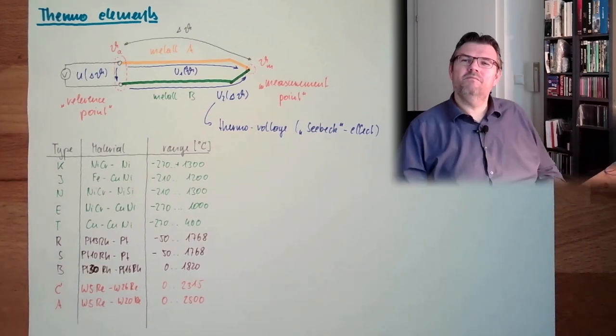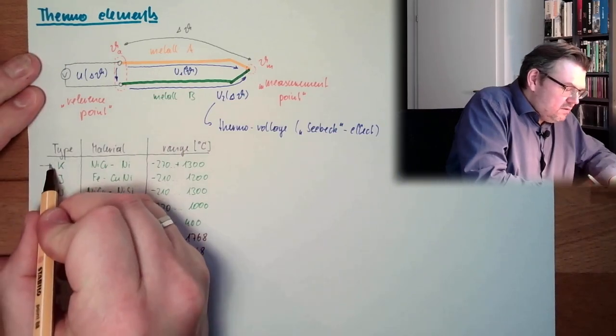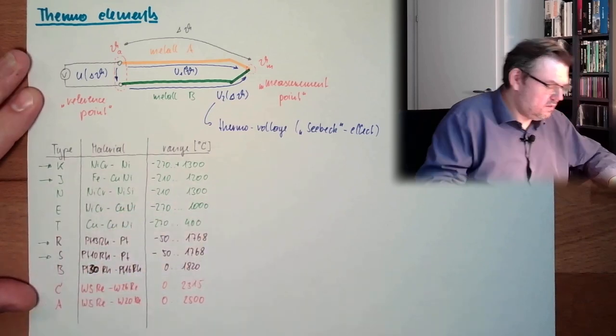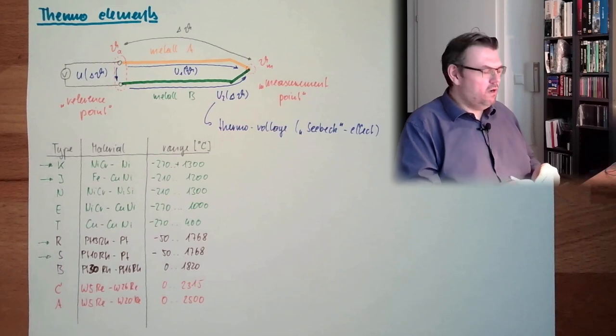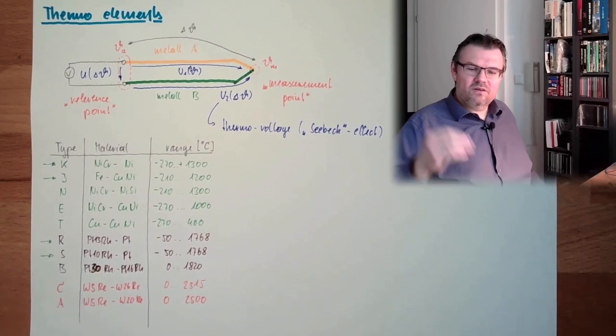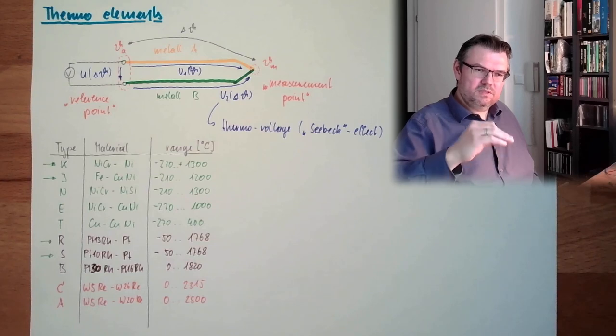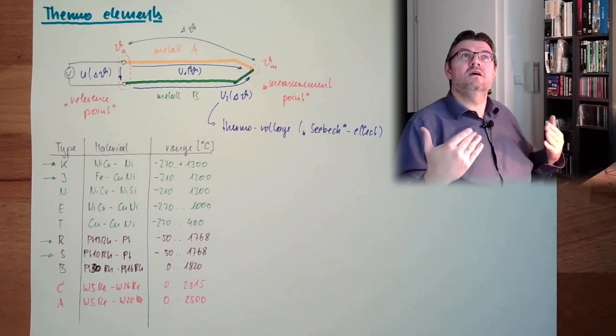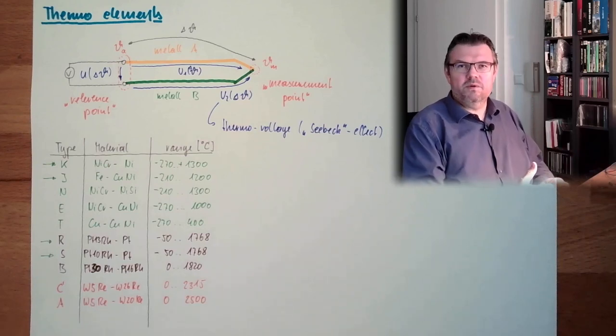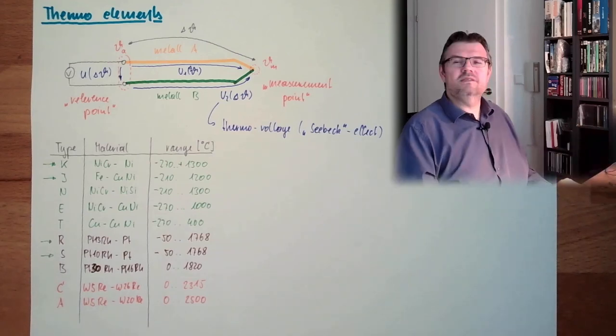So these are different material types. Like I said, very usual types are these. Type K is the main one. But it does not have this specific status like the platinum resistance thermometer. This is absolute standard. Here all of these things are somewhere used.